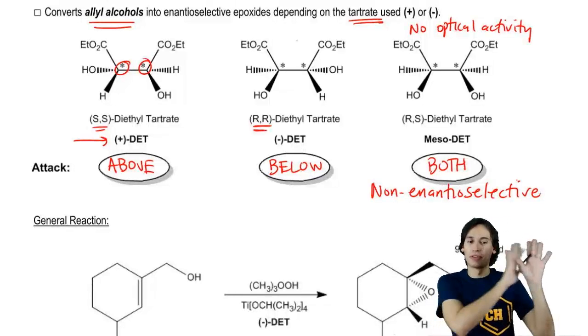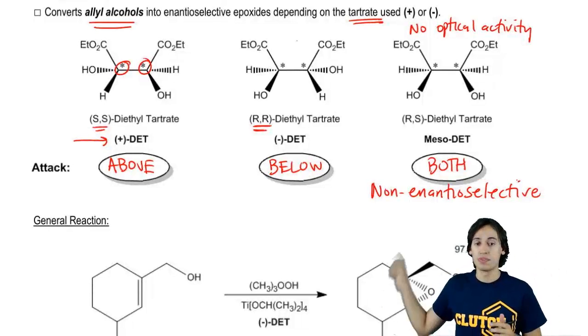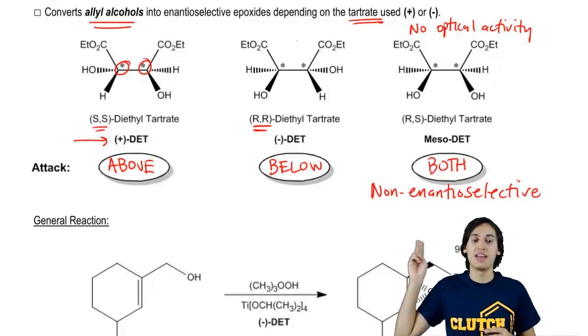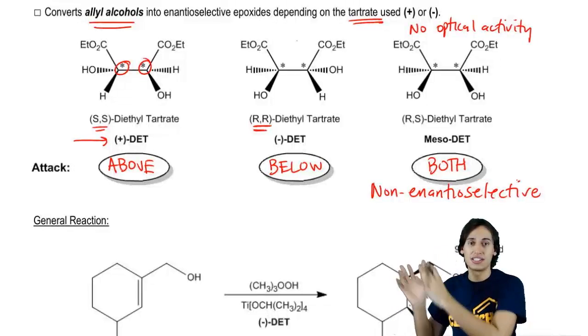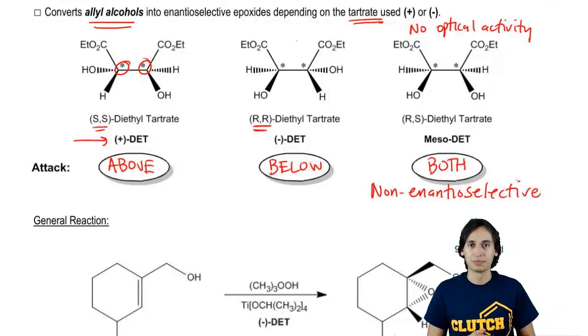So really, we don't really care about the meso one so much and we're not going to use that one synthetically. What we're going to use is positive DET and negative DET as our catalysts to form the upwards epoxide and the downwards epoxide.